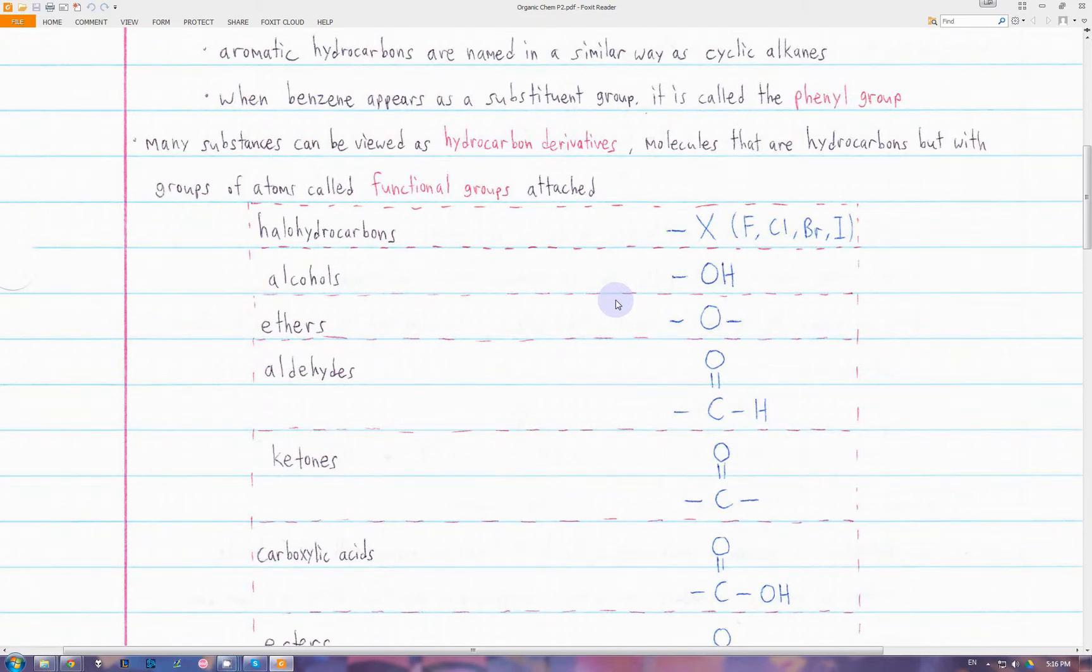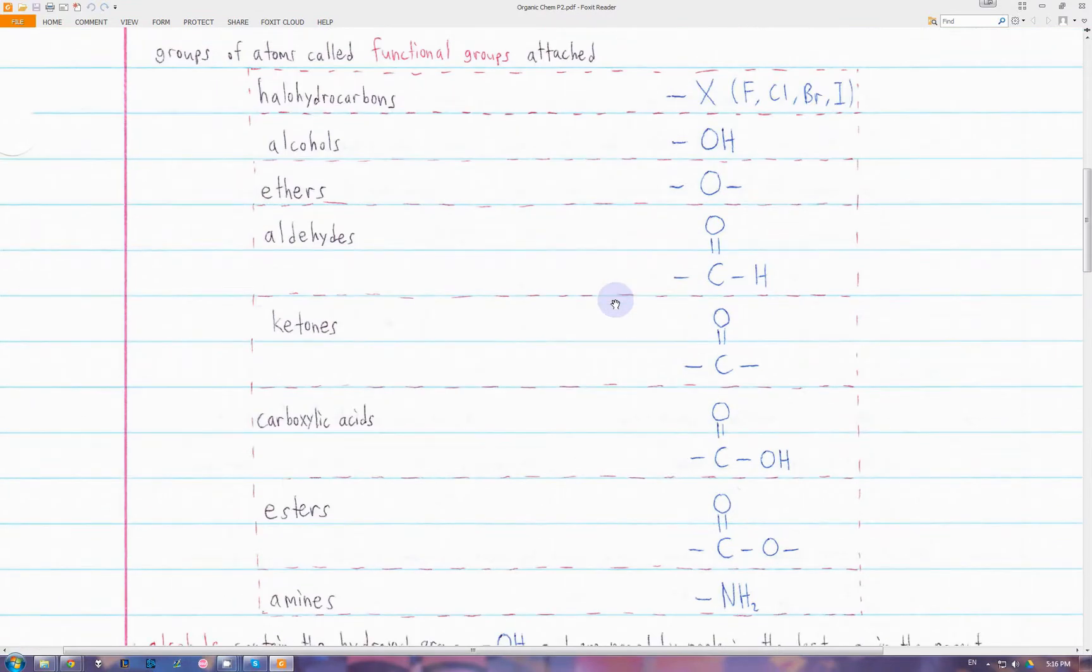Many substances are fundamentally hydrocarbons, but they have a group of atoms called functional groups attached to them. There are many classes of functional groups, and we're going to go over each one individually, but this chart gives an overview of each type.